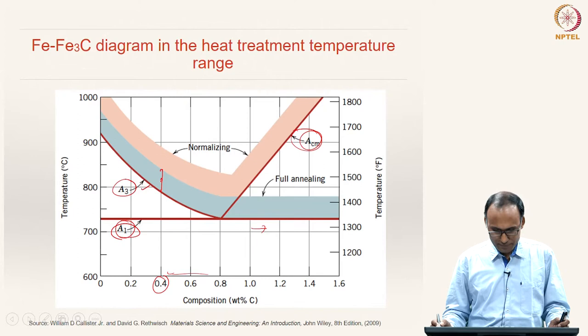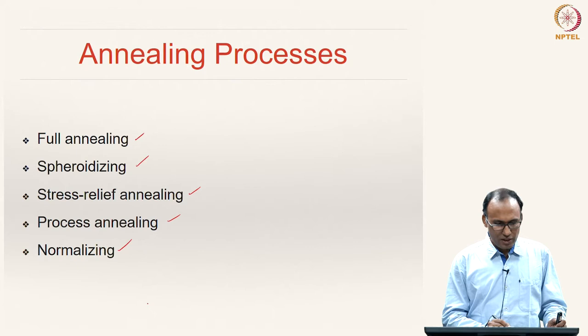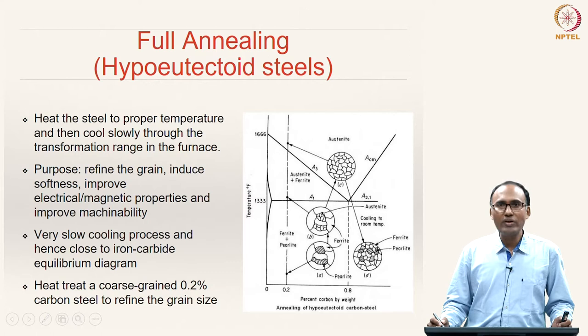There are four to five different kinds of annealing processes: full annealing, spheroidizing, stress relief annealing, process annealing, and normalizing. In this class we will mainly focus on full annealing and normalizing. Let us now look at how to do full annealing for hypo-eutectoid steels.